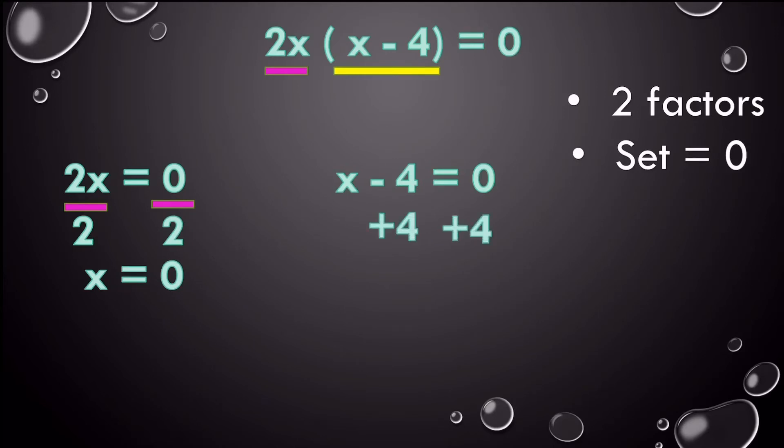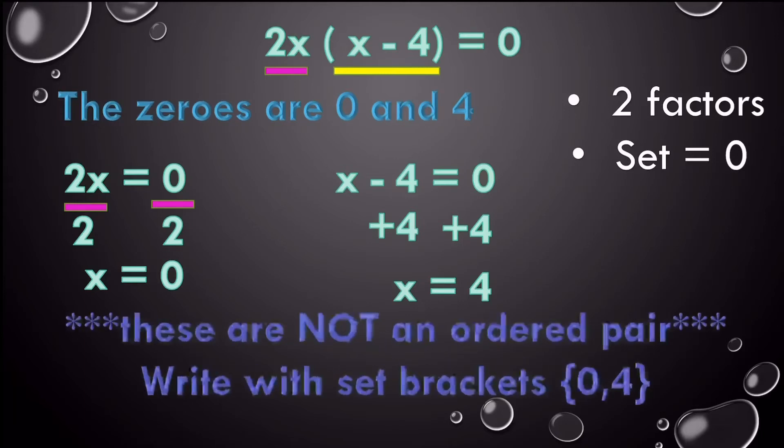I add four to both sides. So x equals 4. The zeros of this problem are zero and four. Or you could say the solutions of this problem are zero and four. The one thing we have to remember when we write these answers, we write them with set brackets. You just can't use parentheses because these are not an ordered pair. Or you actually have to write x equals zero, x equals 4.